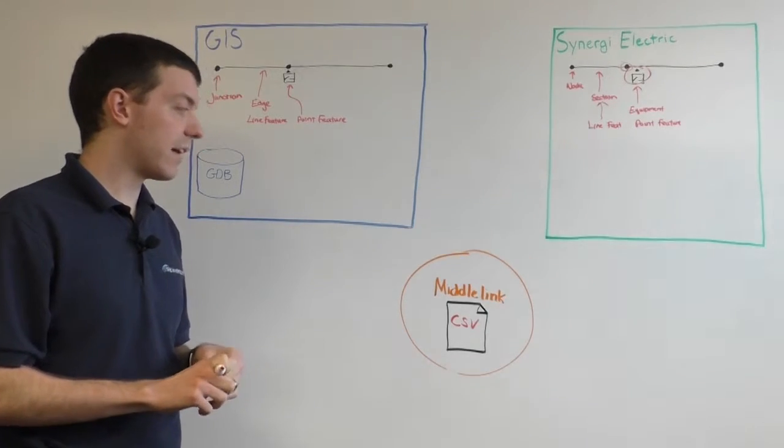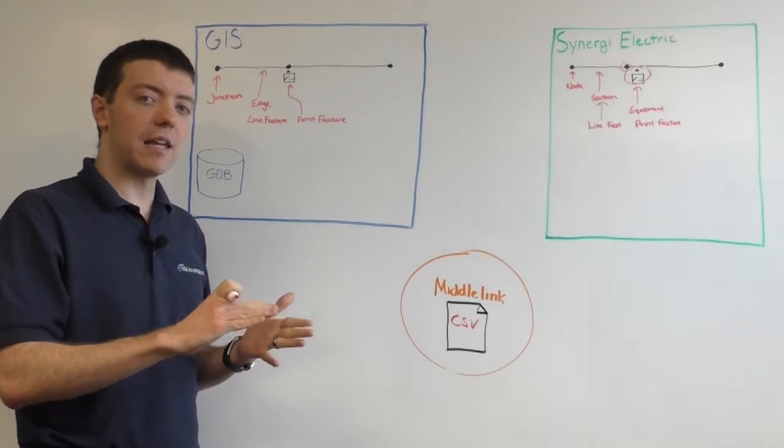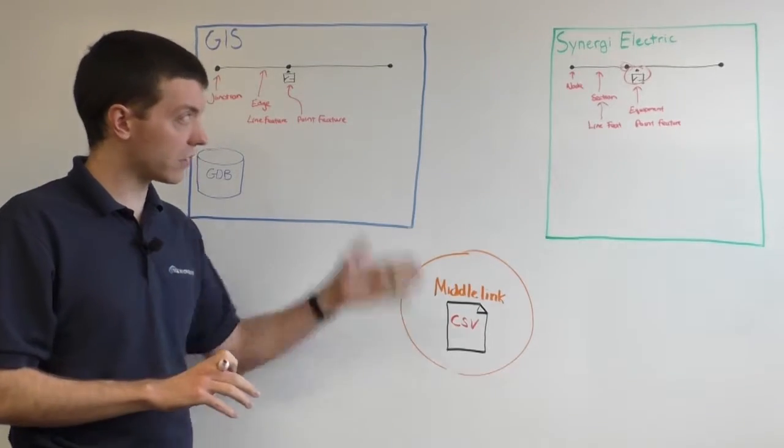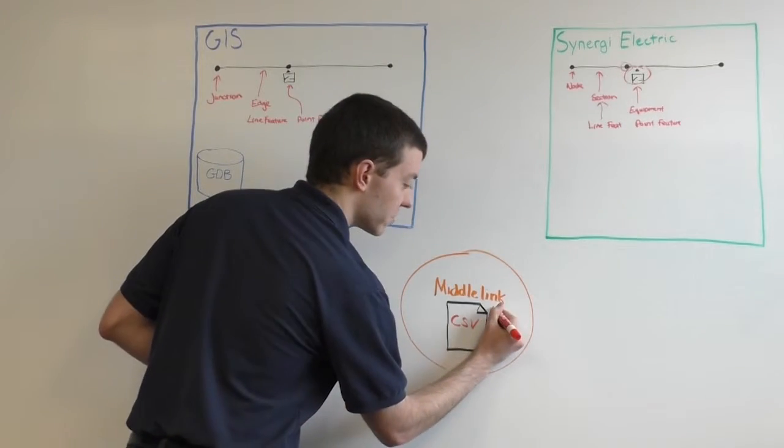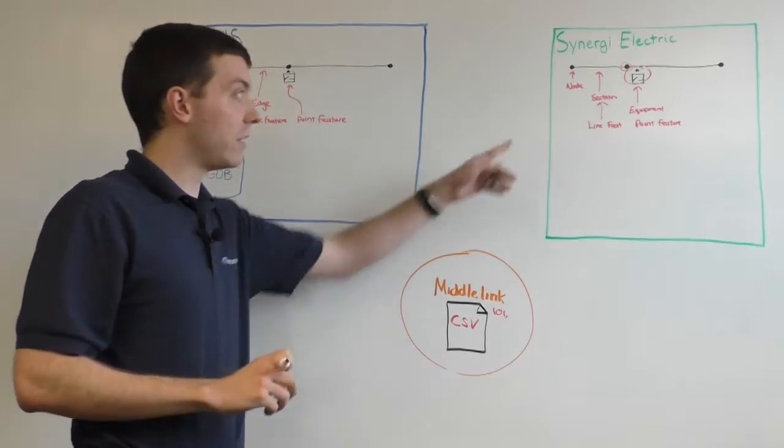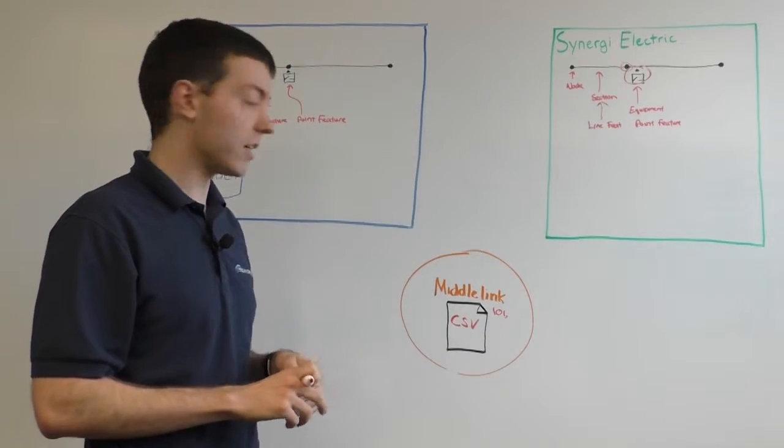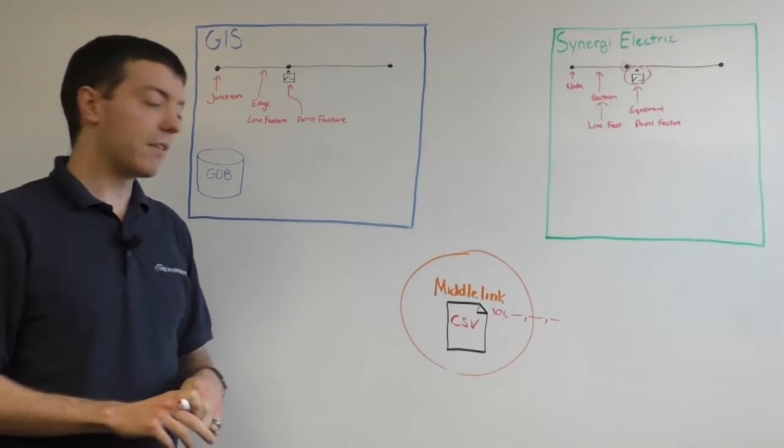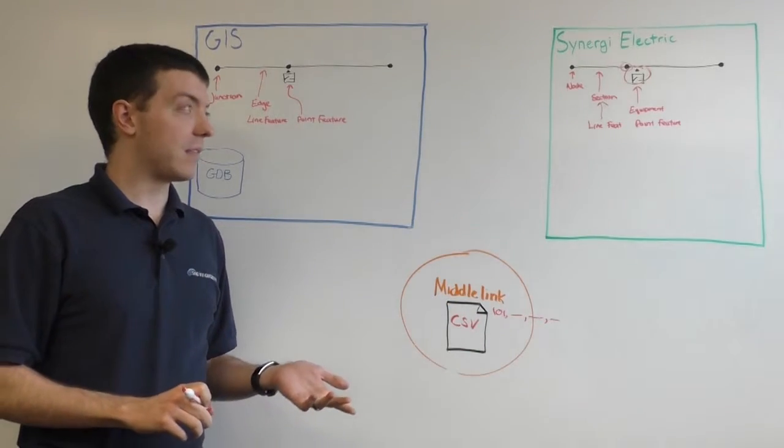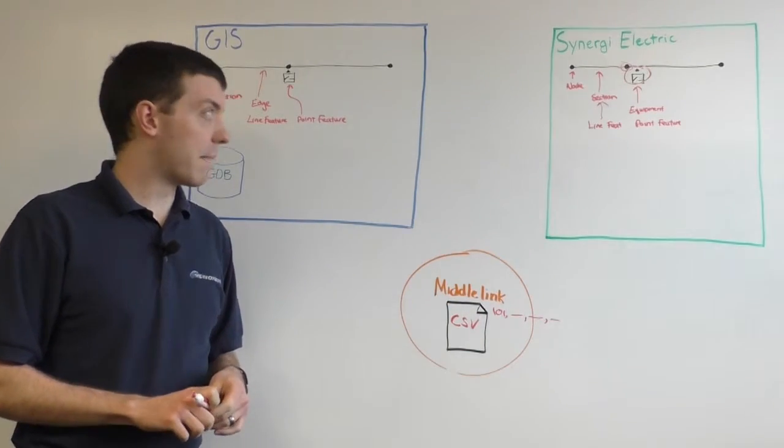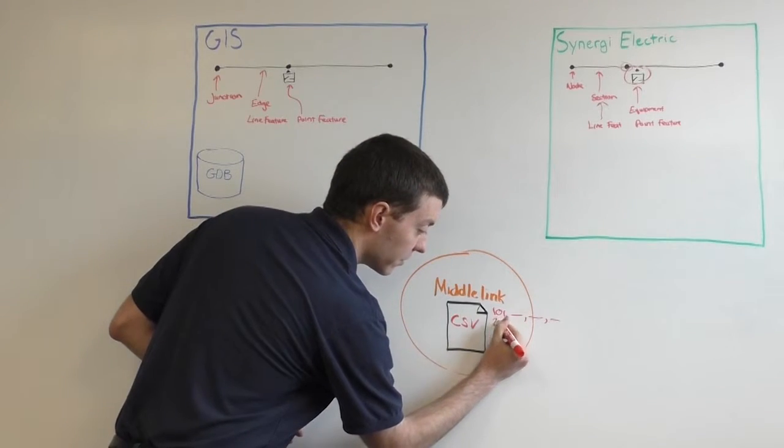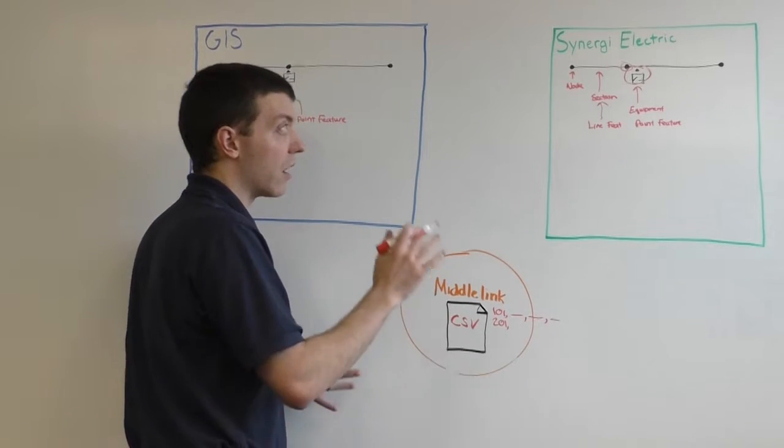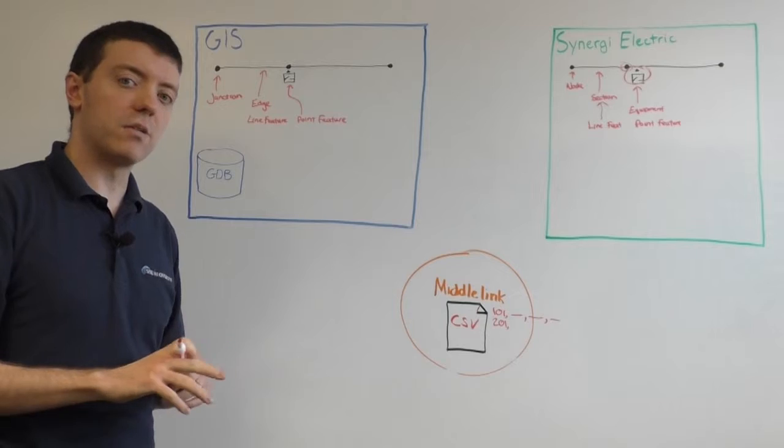So the MiddleLink CSV file has each line considered as a directive. The directives each have codes that correspond to what they're going to do once they're loaded into Synergy. For example, if you have a row that starts with 101, that is to create a node on the map in Synergy, and any additional details are explicitly defined in the MiddleLink schema, and for a node, for example, that would be maybe the coordinates of the point on the map. Just to give a couple other examples, a 201 record would be to create a section. And then, beyond that, there are some other extended features that you can use.